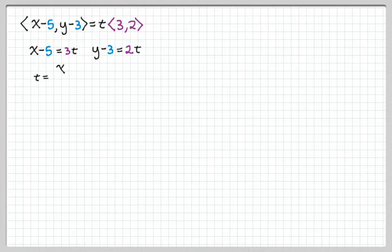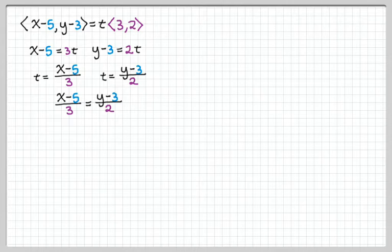I can solve each of these for t now. So t is x minus 5 over 3, or t is y minus 3 over 2. And then if they're both equal to t, they must be equal to each other. So we have this.